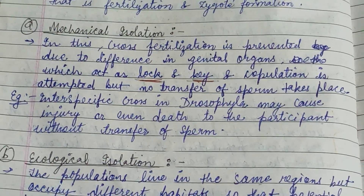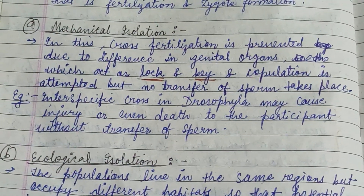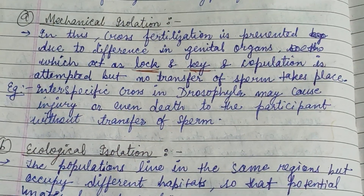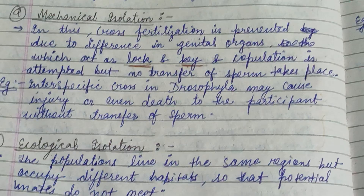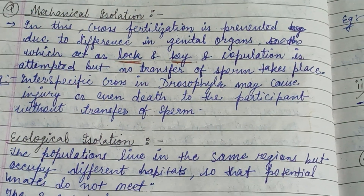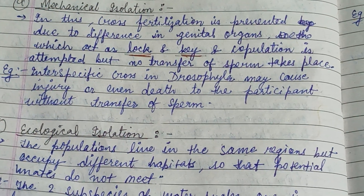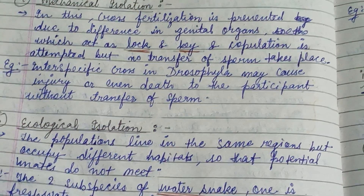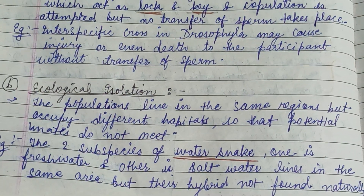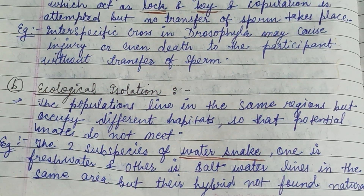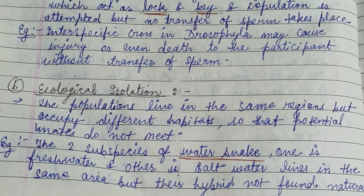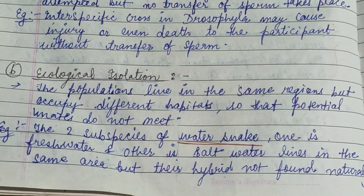Mechanical isolation acts as a lock and key, where differences in genital organs prevent interbreeding among themselves. For example, interspecific crosses in Drosophila may cause injury or even death to the participant without transfer of sperm.